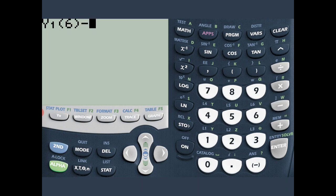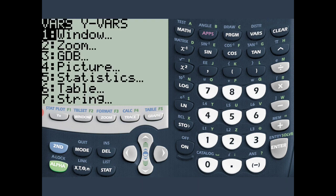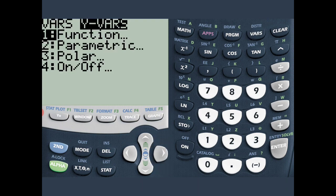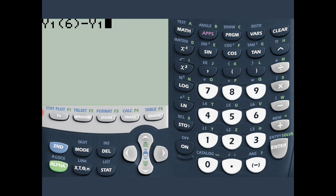And then we're going to subtract that by, we're going to do this again. We're going to press VARS, go to YVARS, enter on function, enter on Y1. And then we're going to evaluate it at 0. We press Enter.